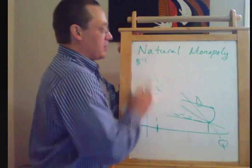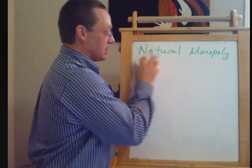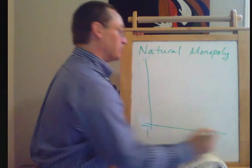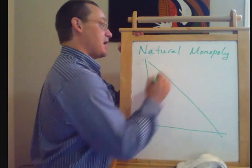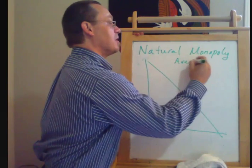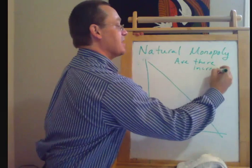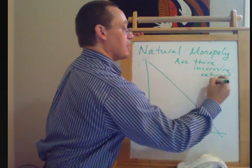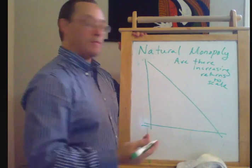So all that is our explanation of natural monopoly. To get just a little bit more exact on what natural monopoly is, the key question is are there increasing returns to scale at the relevant scale of this market?